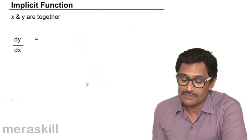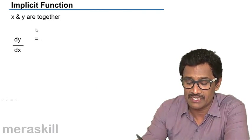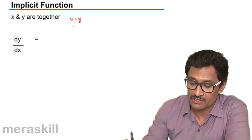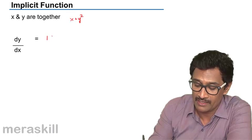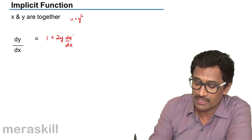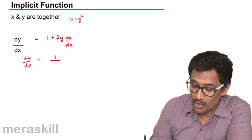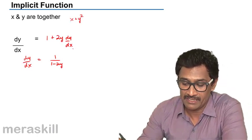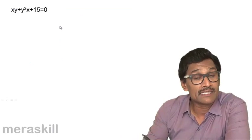This is the concept of implicit functions where x and y are together. As another example, suppose the function itself is (x + y)², then dy/dx: differentiating gives 2(x + y) · (1 + dy/dx). Collecting terms, dy/dx = 1 / (1 - 2y). This is how we find dy/dx.